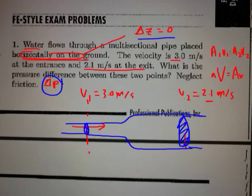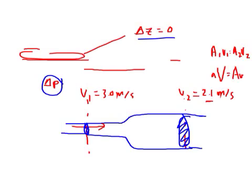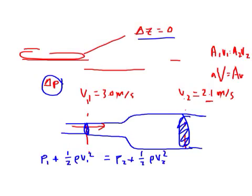Let's rewrite this. We can apply the equation: P1 plus one-half rho V1 squared equals P2 plus one-half rho V2 squared. We're dealing with water, so we know the density of water.